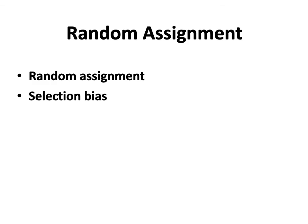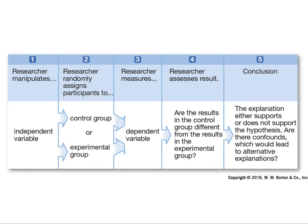Random assignment: you can never be sure you have assessed all possible factors that may differ between groups. Random assignment means placing research participants into conditions in such a way that each participant has an equal chance of being assigned to any level of the independent variable. This balances out known and unknown factors, increasing the likelihood that the groups are equivalent. Selection bias — unintended differences between participants in different groups — can still be a problem. The experimental method can demonstrate causal relationships between variables.